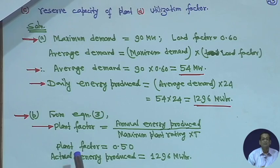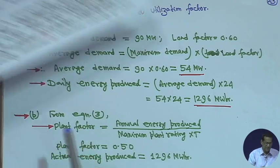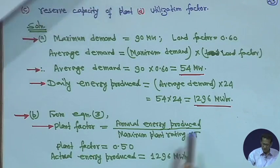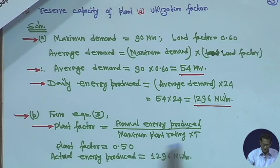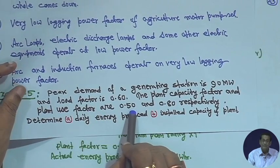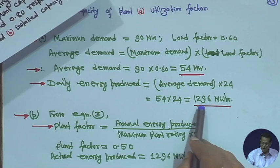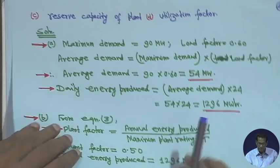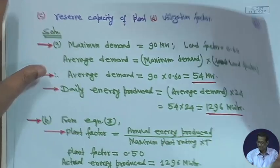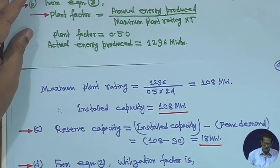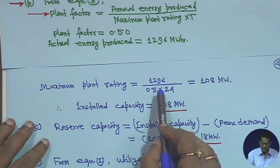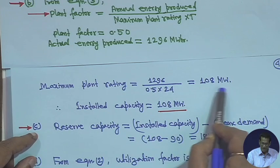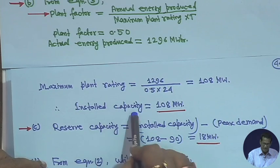For part (b), plant factor = annual energy produced / (maximum plant rating × time). Plant factor is given as 0.5, and energy produced is 1296 MWh. Therefore, maximum plant rating = 1296 / (0.5 × 24) = 108 MW. This is the installed capacity of the plant.